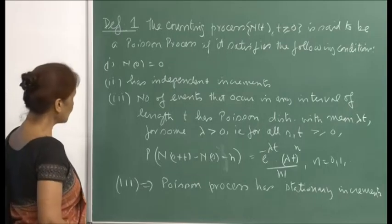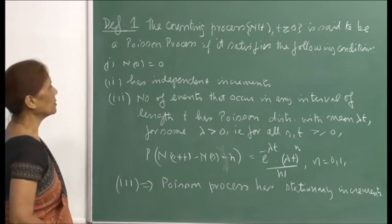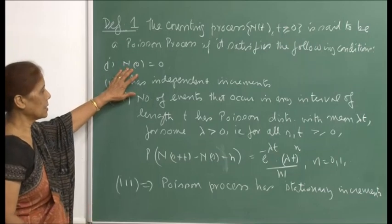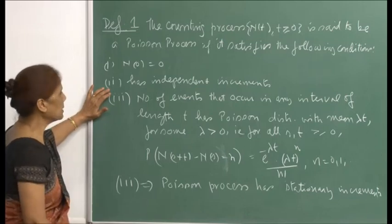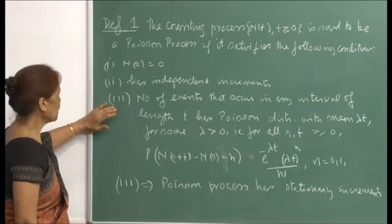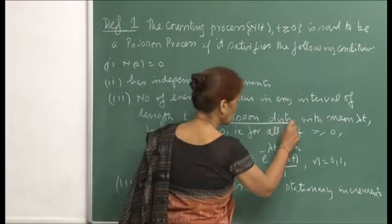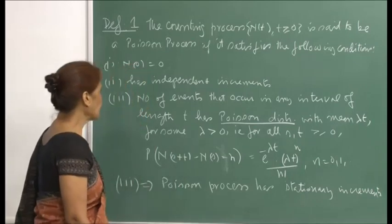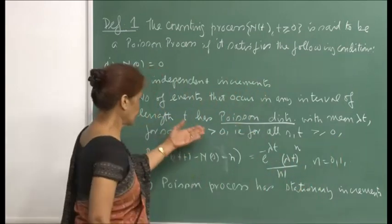After having defined a counting process, I now make a definition of a Poisson process. The counting process {N(t), t ≥ 0} is said to be a Poisson process if it satisfies the following conditions: first, N(0) = 0; second, it has independent increments; third, the number of events that occur in any interval of length t has Poisson distribution with mean λt, where λ is some positive constant.